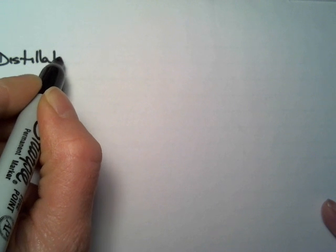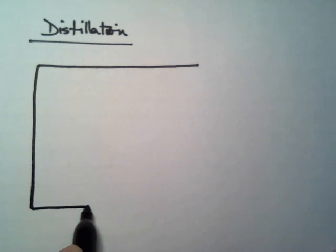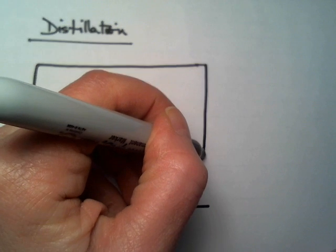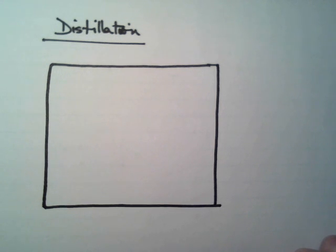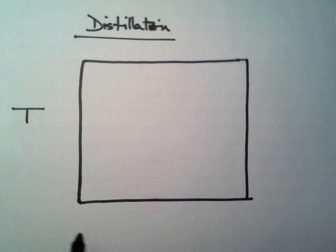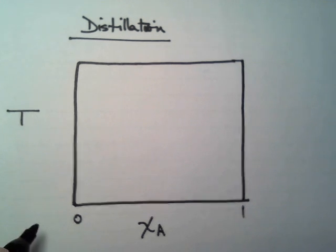Let's look at distillation and map one out on a phase diagram — not just any phase diagram, but a boiling point diagram. That would be temperature versus composition on the axes.